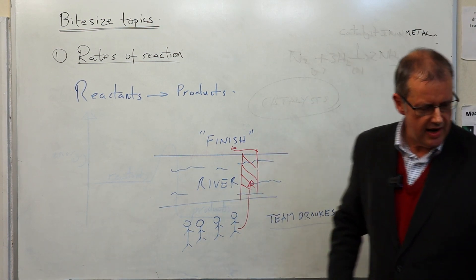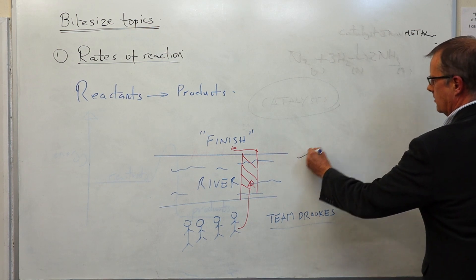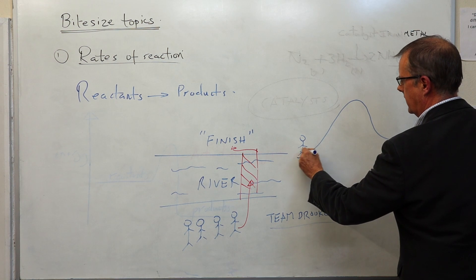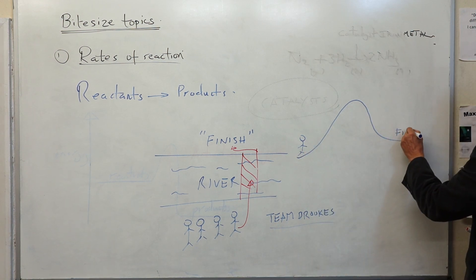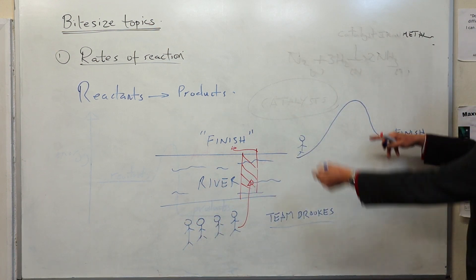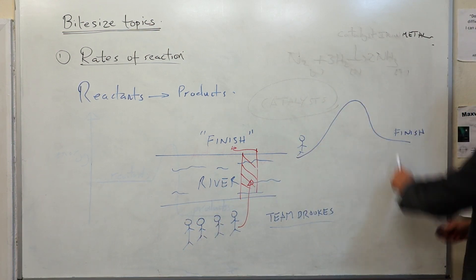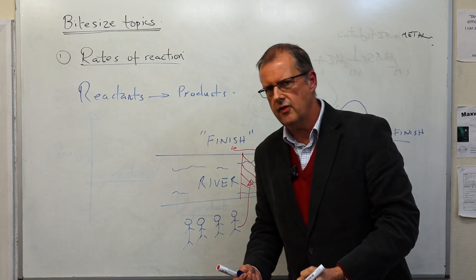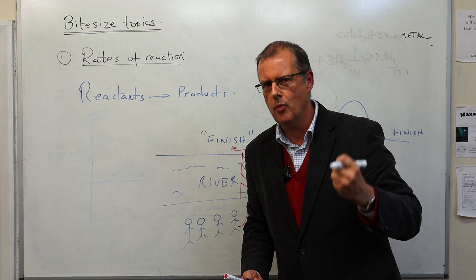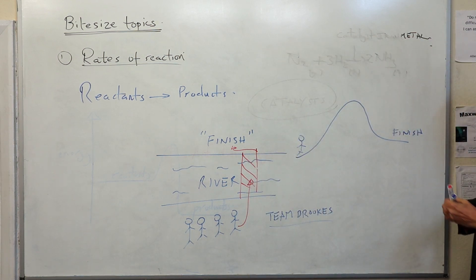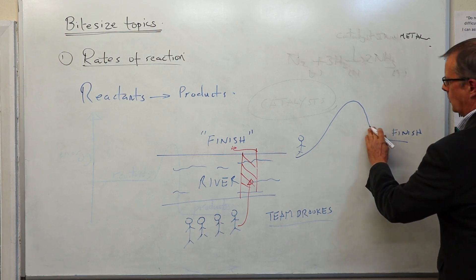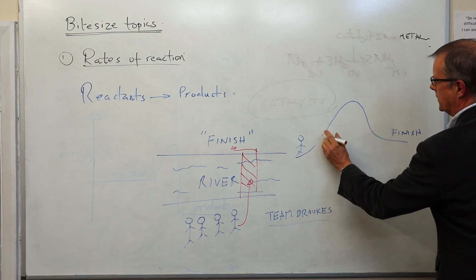Another analogy: if I've got a hill here, and I've got my team of students on one side and the finish is over the other side — if we've got to get to the finishing line, it takes a huge amount of effort to get over the hill. How would a catalyst help in that little story? What the catalyst does is build a tunnel.